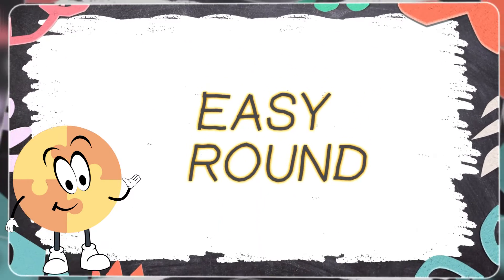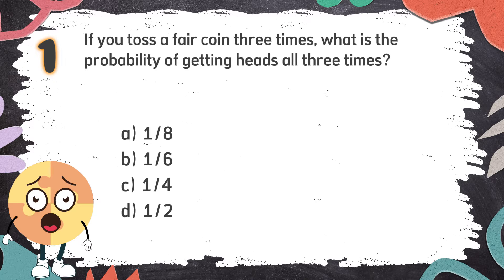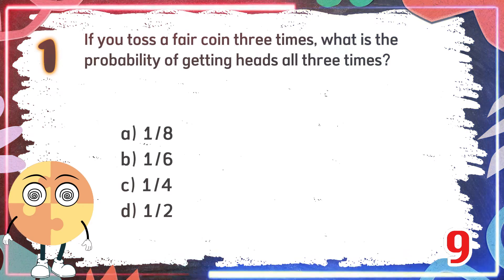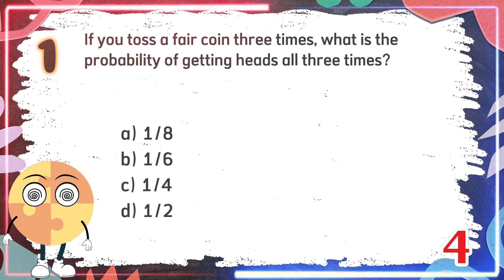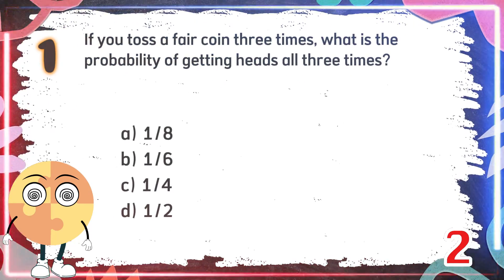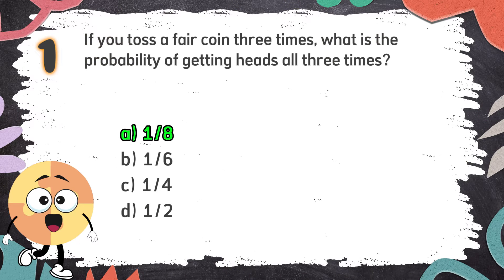Easy round. Number 1. If you toss a fair coin three times, what is the probability of getting heads all three times? The choices are A. 1 eighth, B. 1 sixth, C. 1 fourth, D. 1 half. The correct answer is A. 1 eighth.